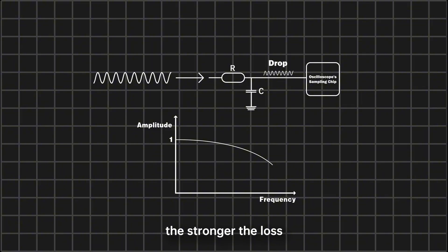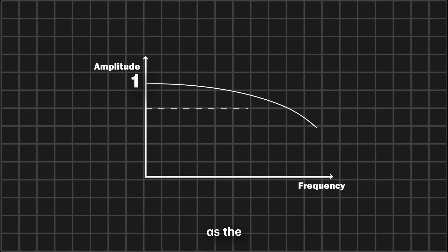The higher the frequency, the stronger the loss. Bandwidth is defined as the frequency where the signal amplitude drops to 0.707 times its original value.